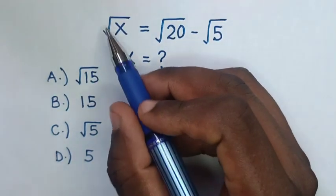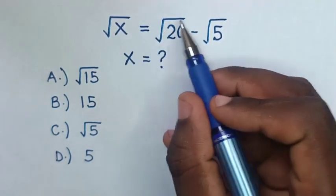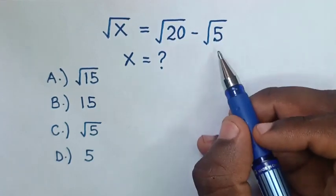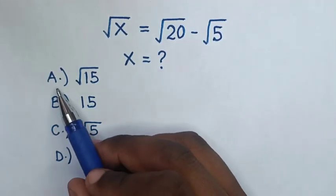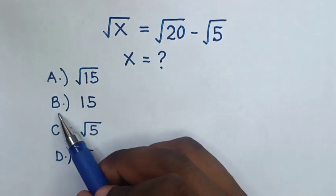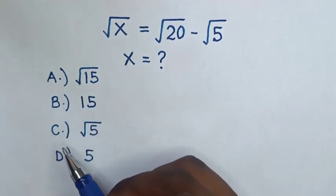Hello, how to solve square root of x equals square root of 20 minus square root of 5 to find the value of x by choosing between the answers: A, square root of 15; B, 15; C, square root of 5; D, 5.